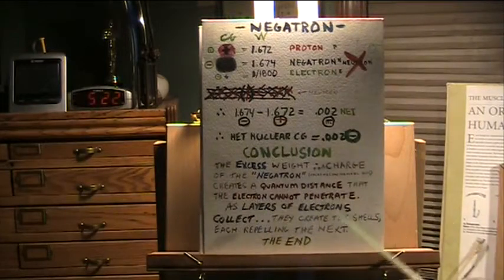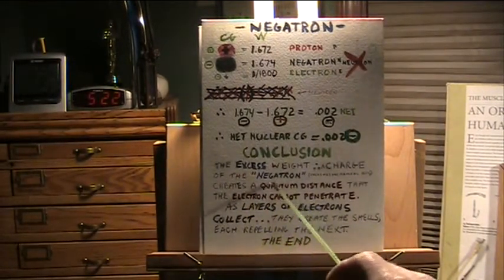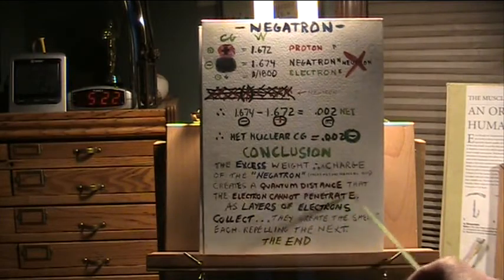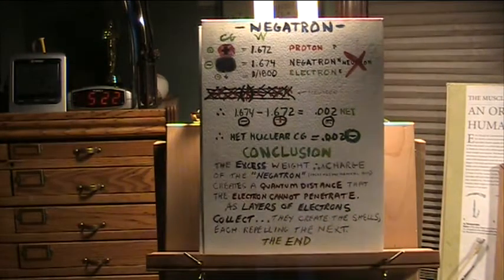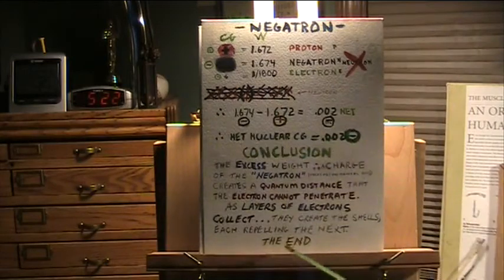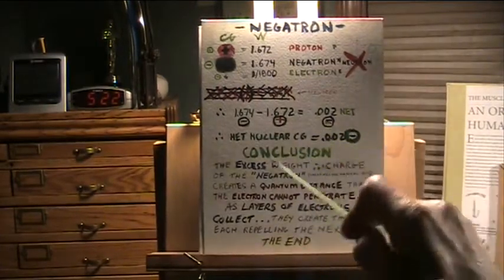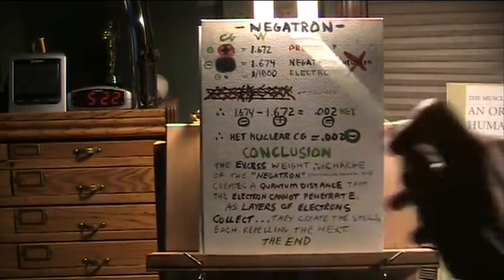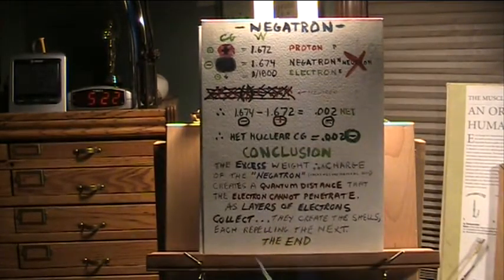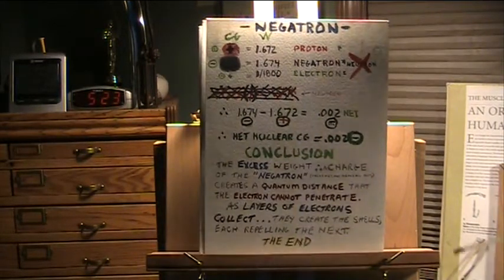This negatron being negative creates the quantum distance that electrons just can't penetrate into the nucleus, so they create that cloud of electrons, which are the orbitals, and then the first orbital stacks up. Then the next ones can't get into that one, so they stack up, then the next one, then the next one. The layers of electrons collect, they create the shells, each repelling the next — the end.